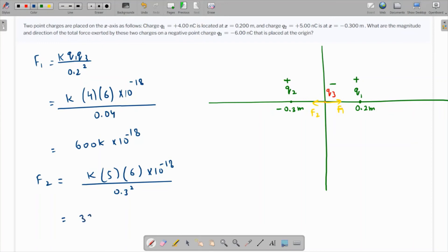That's 333.33k times 10 raised to minus 18. Definitely F1 is greater, so the direction is towards right. That is the direction of the F net which is going to be F1 minus F2.